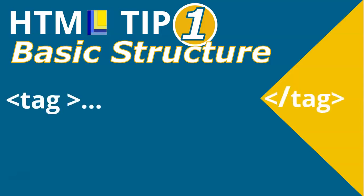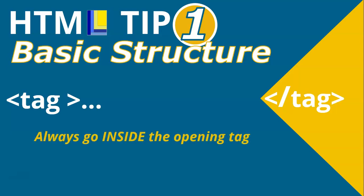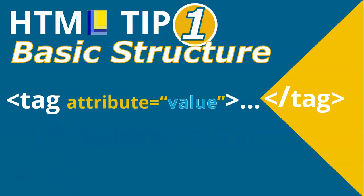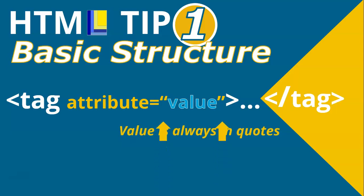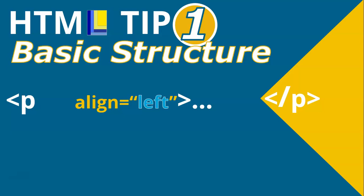You normally have your tag and your closing tag, but if you're going to put an attribute, the attribute must go inside the opening tag. You have your attribute equal to a particular value — your value must always be in double quotes. For example, you've got your paragraph tag and the align attribute is equal to the left value in double quotes. And don't forget the closing P tag.